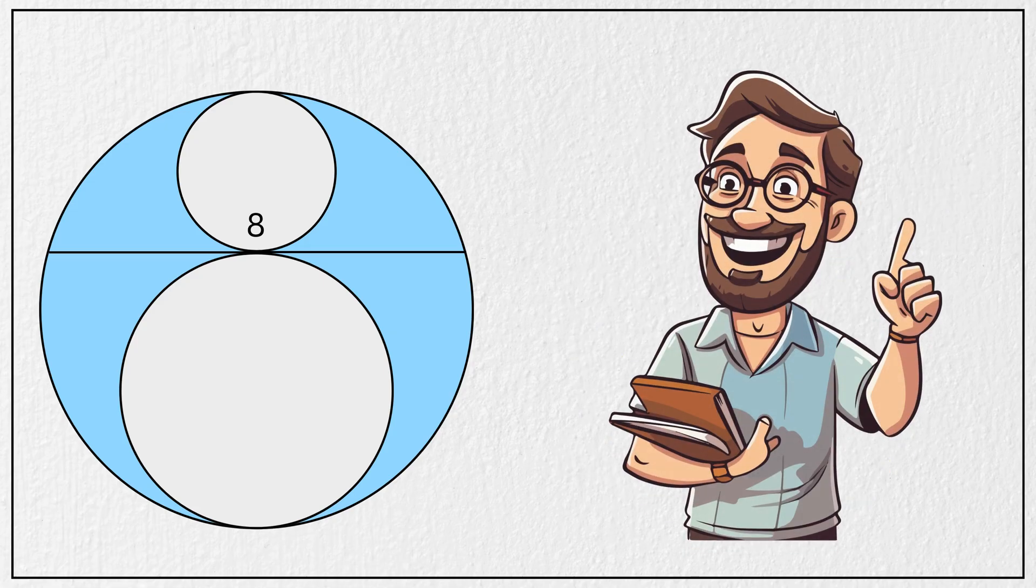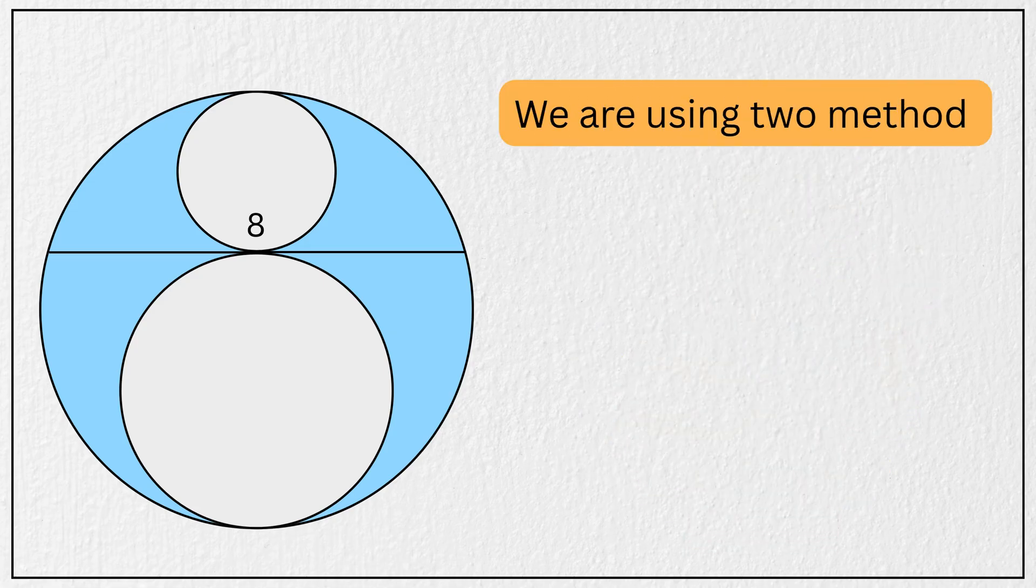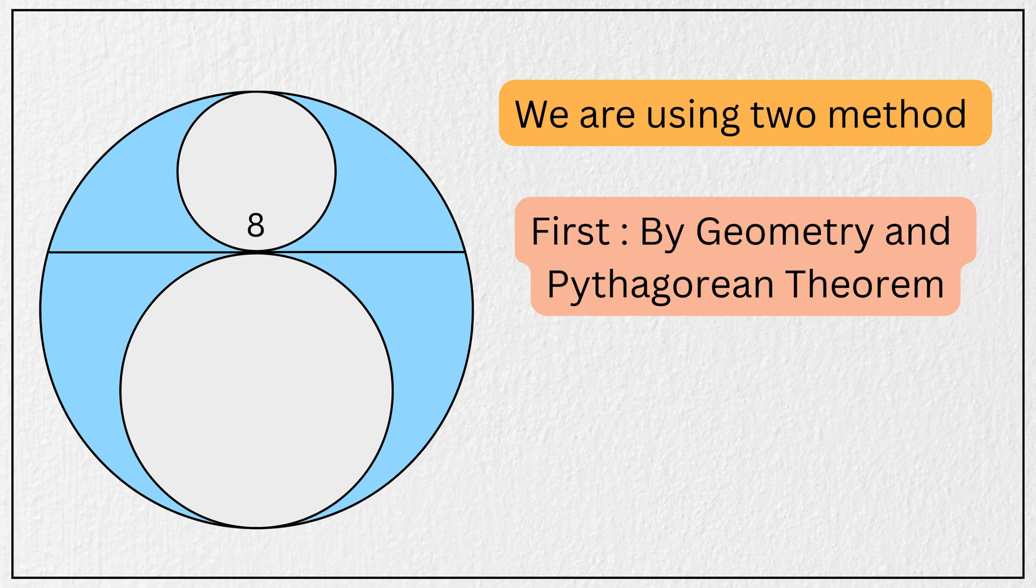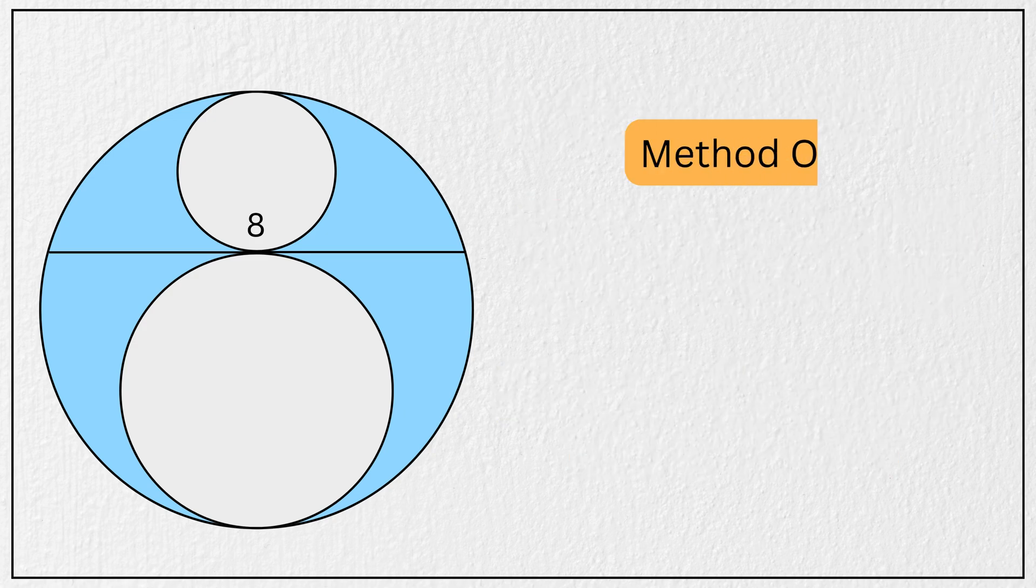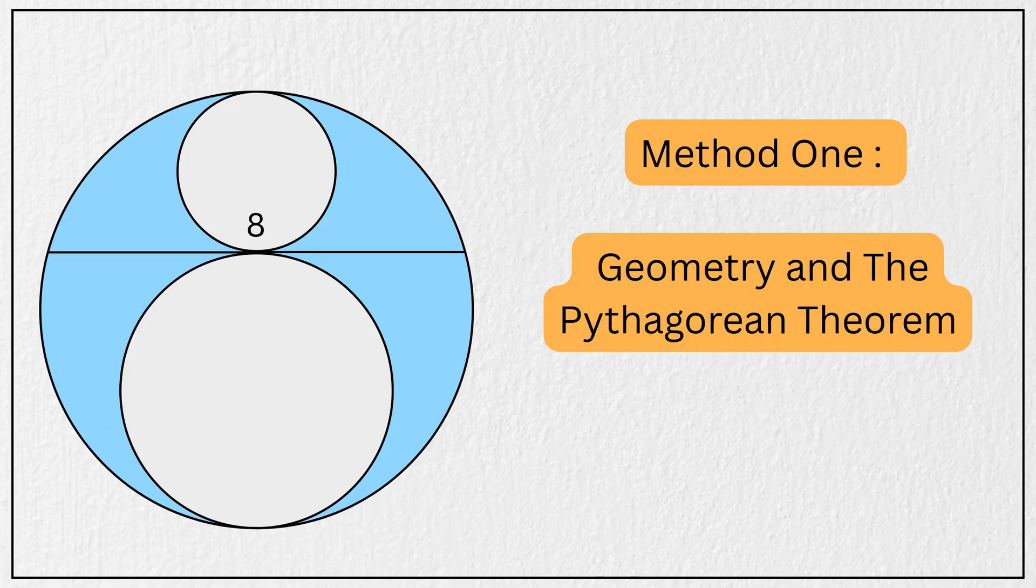There are many ways to solve this problem, but we are going to use two methods. First, Geometry and Pythagorean Theorem, and the second, Intersecting Chords Theorem. Method 1, Geometry and the Pythagorean Theorem.